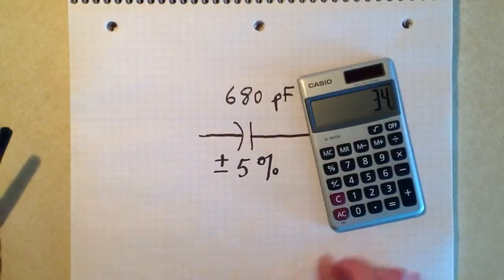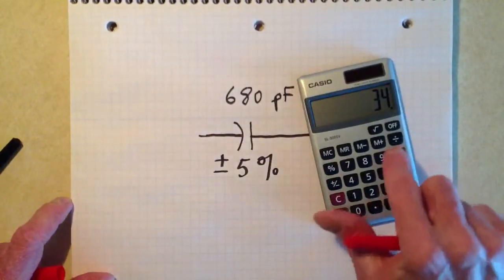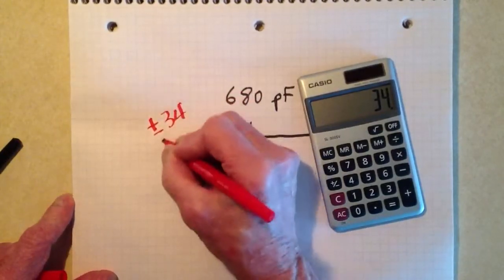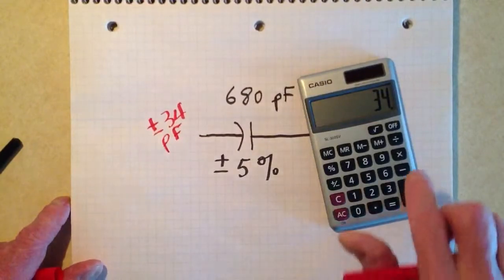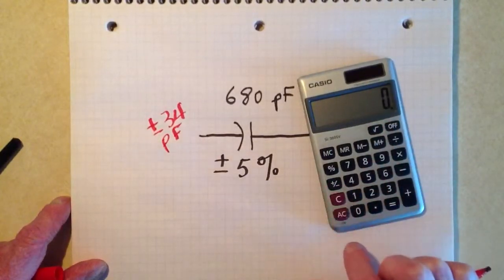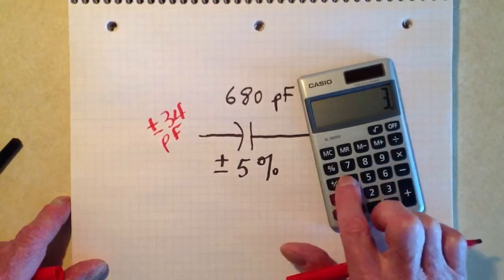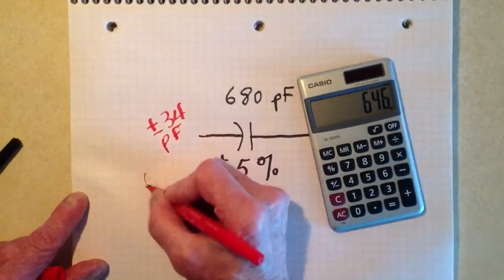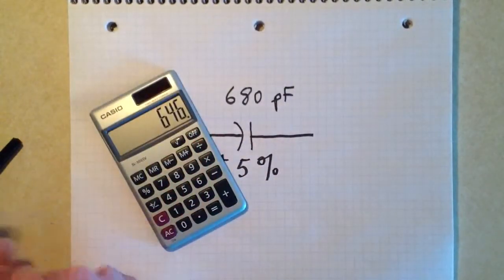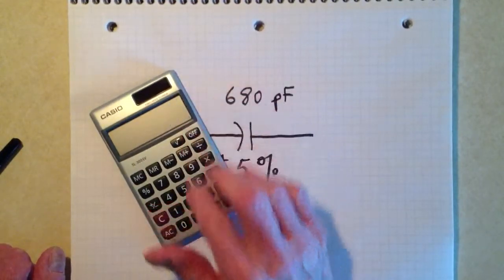From my way of looking at it here, I can't really figure out what 5% of 680 is in my head. However, 680 times 0.05 equals 34. 34 pF either way of 680. So we should reasonably expect then that the capacitor will have a value of 680, let's just write this down so we don't forget it, plus or minus 34 pF.